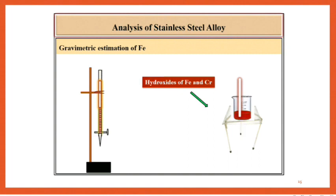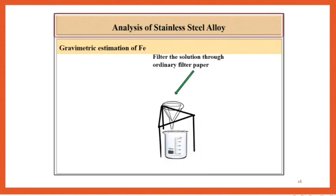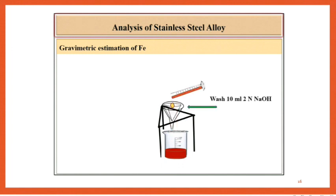Filter the precipitate. The precipitate consists of hydroxides of both Fe and Cr. Allow it to settle down, then filter through ordinary filter paper. Pierce the filter paper and wash with 10 ml 2 normal NaOH and 10 ml 3% H2O2.